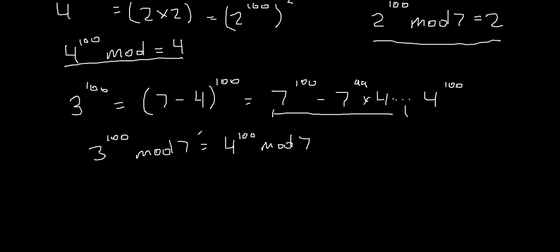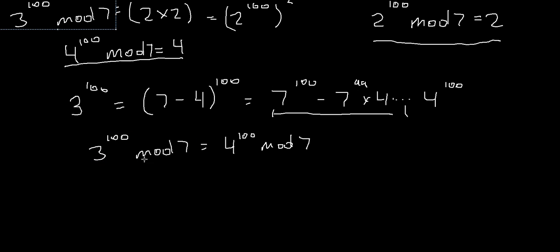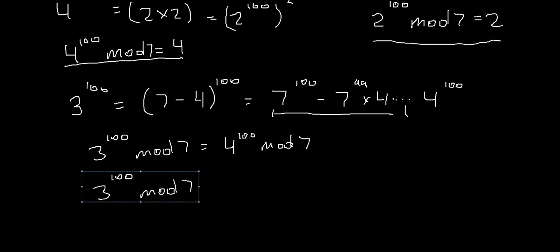And we already calculated that. 4 to the power of 100 mod 7 equals 4. So 3 to the power of 100 mod 7 is also equal to 4.